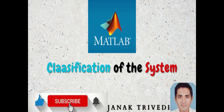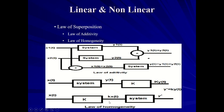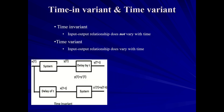Welcome to classification of systems practice. x(t) is generated and applied to a system that generates y'(t). If both results are the same, the system is said to be time-invariant. The first figure represents the time-variance system, where x(t) is applied to a system giving y(t), then delayed by T to give y(t minus T).